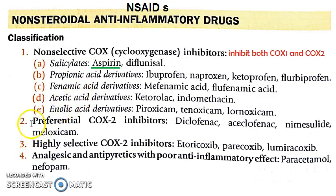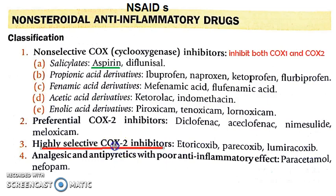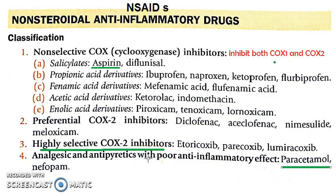The next category is preferential COX-2 inhibitors — these prefer COX-2 but are not highly selective. Then there are highly selective COX-2 inhibitors, which inhibit mainly COX-2 only. This is desirable because COX-2 is the pathological enzyme we want to inhibit. Finally, paracetamol falls under NSAIDs but has poor anti-inflammatory activity — it is mainly analgesic and antipyretic.